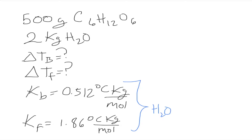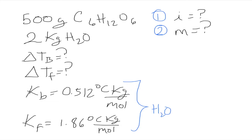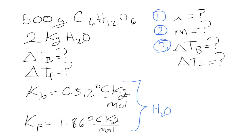We can separate this problem into different steps since it's asking for two things that use pretty much the same equation. The first step is to determine our van 't Hoff factor. Another factor shared by both equations is molality, so we also have to find that. Finally, with Kb and Kf given, we simply plug into the formulas to find the boiling point increase and the freezing point decrease.